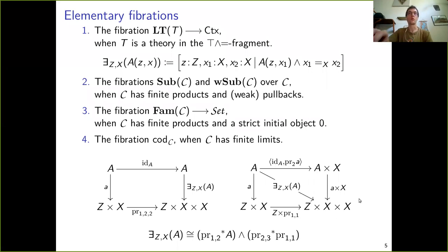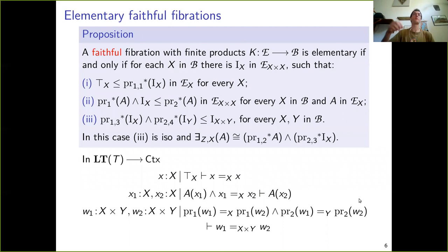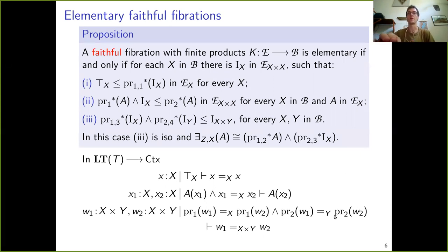This is no coincidence, because for faithful fibrations we have a characterization of those faithful fibrations with products that are elementary, in terms of a family of objects I_x in the fiber over X × X satisfying three properties, which should look quite familiar especially in the internal language. In particular we get a description of the left adjoint as a general result.